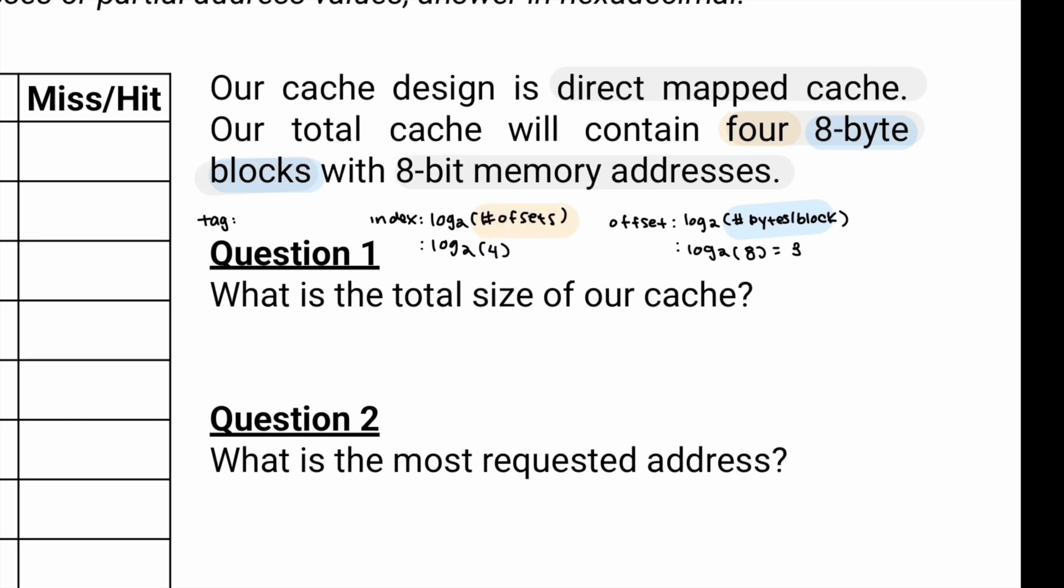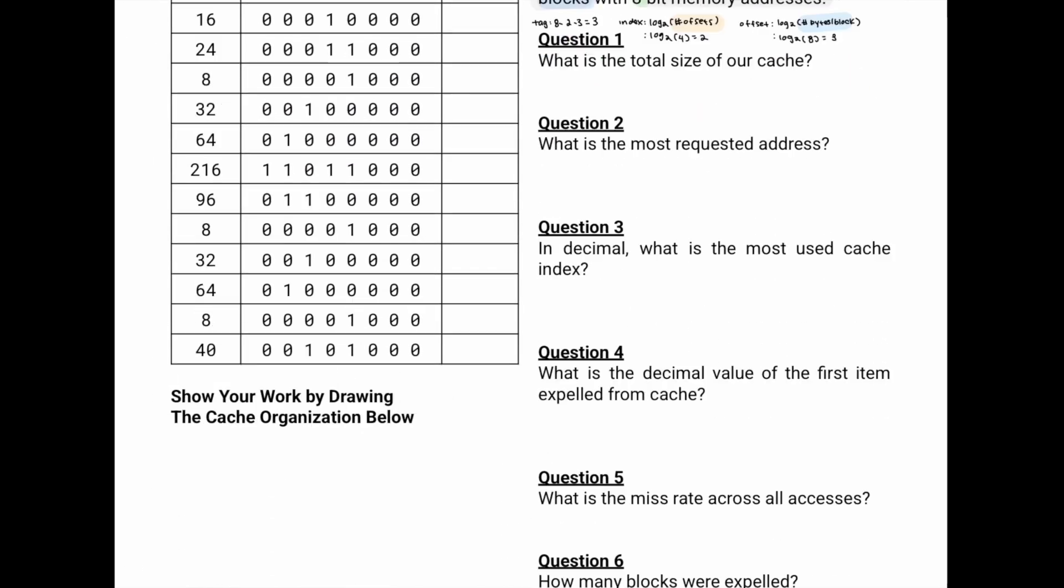So log2 of 4 is equal to 2, and then tag will be our 8-bit memory address minus our index minus our offset. So it'll be 8 minus 2 minus 3 is equal to 3. Okay, now that we have this information, let's move on to the rest of the questions.